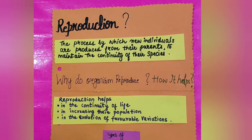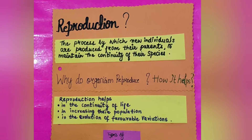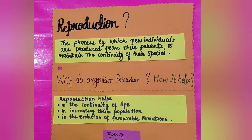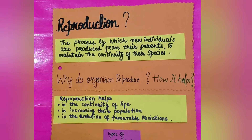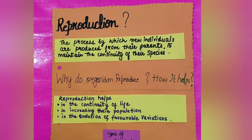Today we are going to talk about reproduction — producing offspring of one's own type. It is a process shown by living organisms where new individuals are produced from their parents.